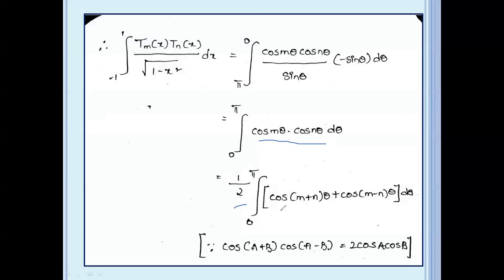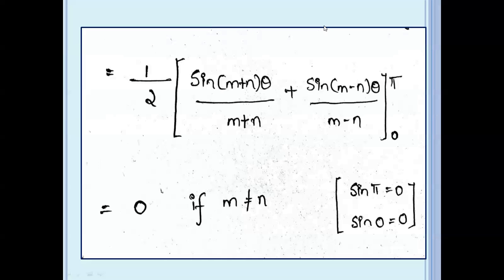Applying this formula and taking 1 by 2 outside, we get: integral from 0 to π of cos(m+n)θ plus cos(m minus n)θ dθ. We integrate with cos: sin(m+n)θ divided by (m+n) plus sin(m minus n)θ divided by (m minus n).